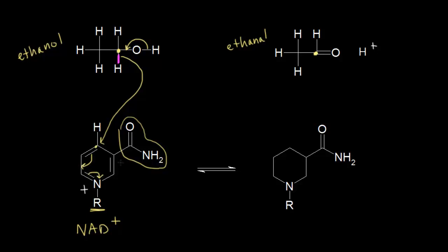That would push these electrons over here, and that would push these electrons off onto the nitrogen. So if we showed what happened with the movement of all of those electrons: this carbon right here at the top already had a hydrogen bonded to it, and it gained another hydrogen with two electrons — the two electrons in magenta. The electrons in magenta move over to our ring, we also have pi electrons moved over, and a lone pair moves off onto the nitrogen. This molecule is called NADH — it's gained the equivalent of a hydride, a hydrogen with two electrons. So NAD+ gains two electrons, and gaining electrons is reduction: NAD+ is reduced to NADH.